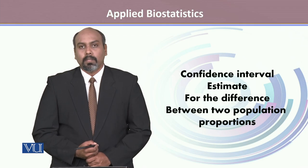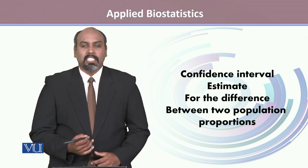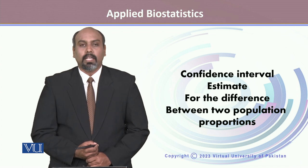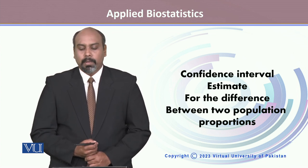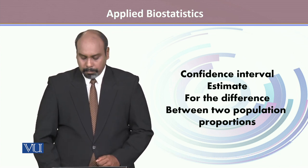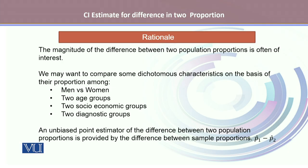This module talks about estimating the confidence interval estimate for the difference between two population proportions. Sometimes researchers are interested to measure the magnitude of the difference between two population proportions. They may want to compare some dichotomous characteristics on the basis of their proportion among men versus women or maybe knowing the differences between two age groups.